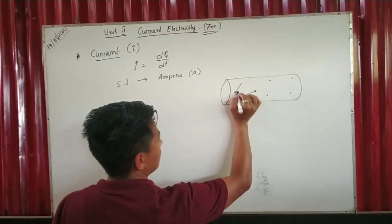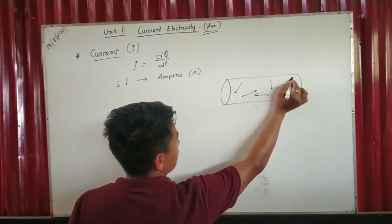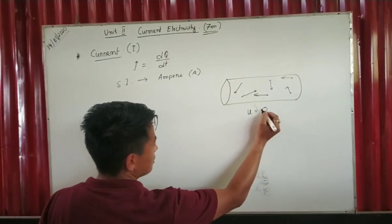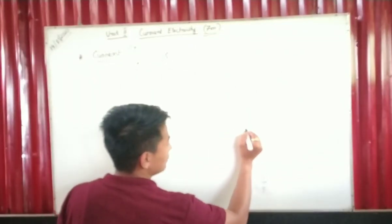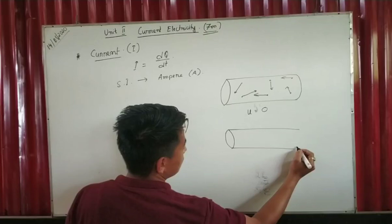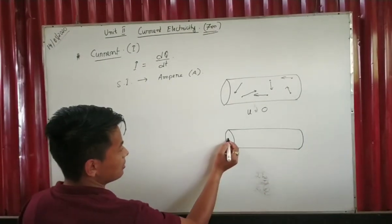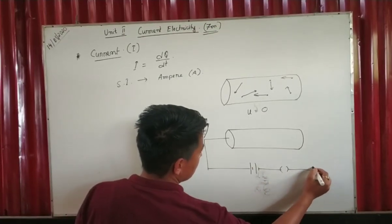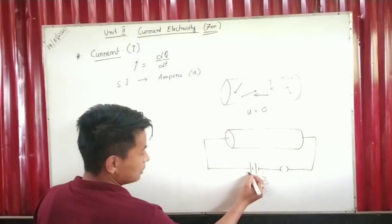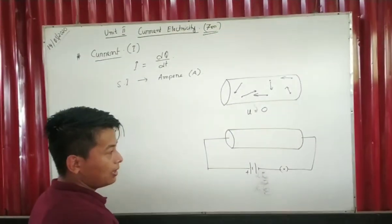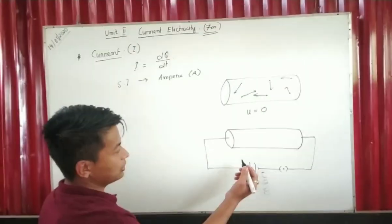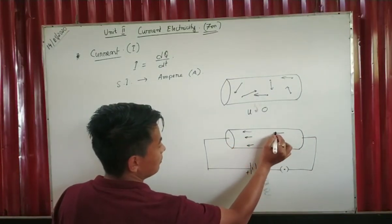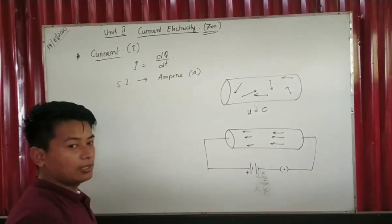If the current is moving in all directions, the average velocity is zero. When the potential difference is applied — meaning the battery — if the battery has positive and negative terminals, the flow becomes unidirectional.